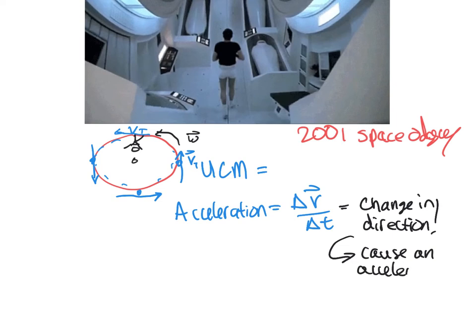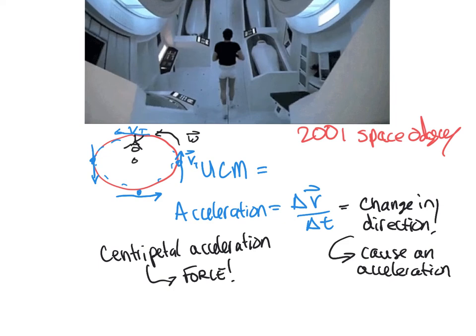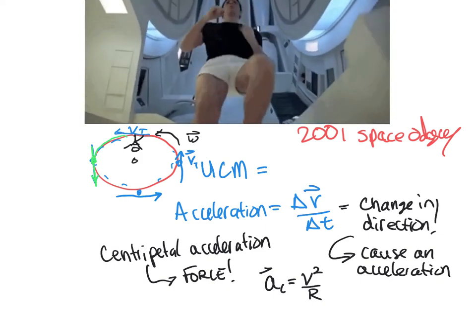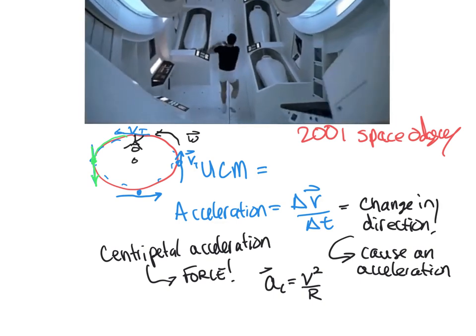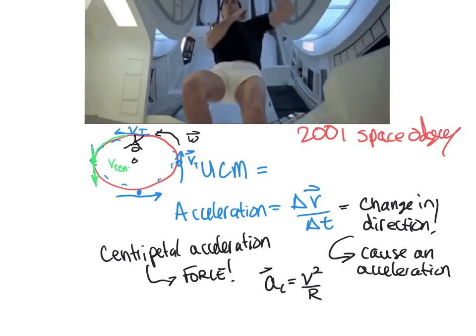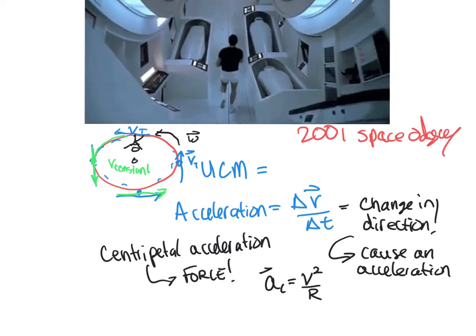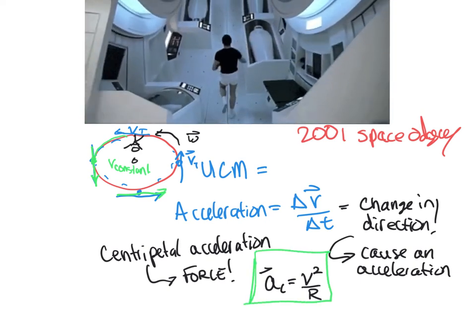A change in direction can cause an acceleration, and we actually have a name for this acceleration. It's called centripetal acceleration, also known as centripetal force. The acceleration in a circle, or centripetal acceleration, is actually equal to V squared over R. Even though they're moving at a constant speed, so their velocity is constant, the direction of that velocity is changing, and this is causing our centripetal acceleration.